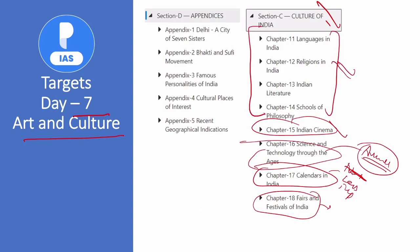Mainly you have to focus on these 4 chapters — that is the key thing. After that, in Section D of your Nitin Singhaniya, you have to focus mainly on the Bhakti and Sufi movement. That is what you mainly need to cover for today's goal.